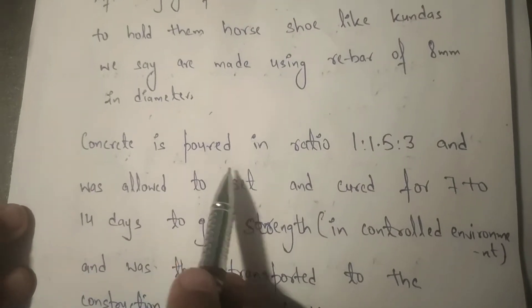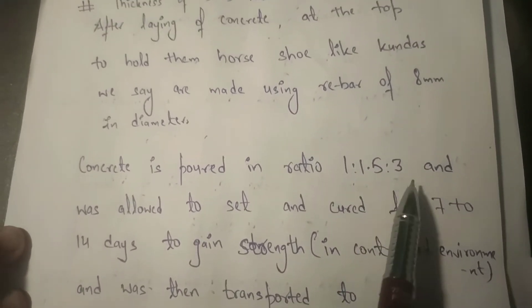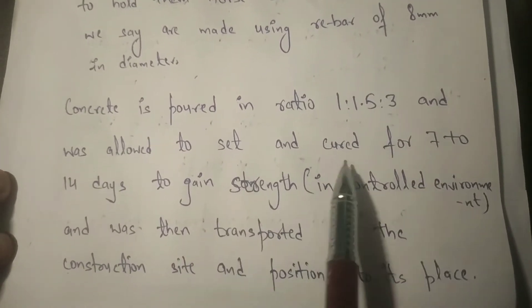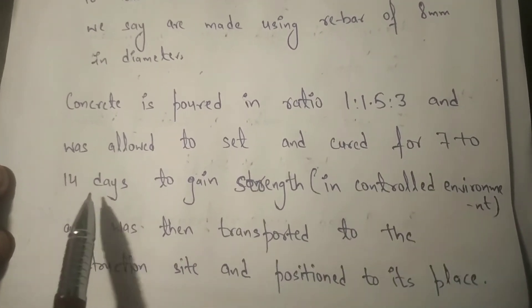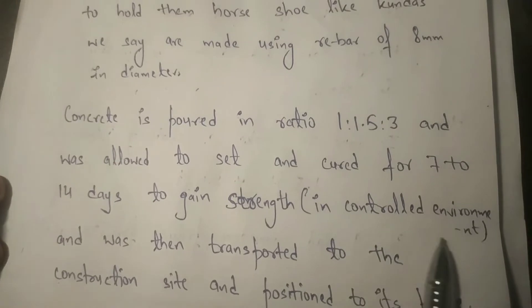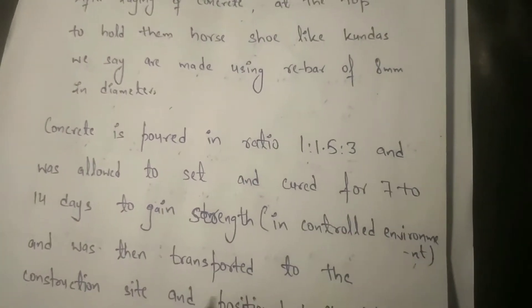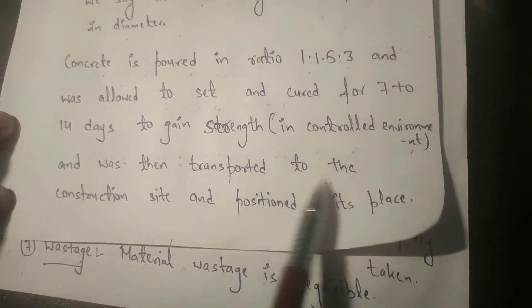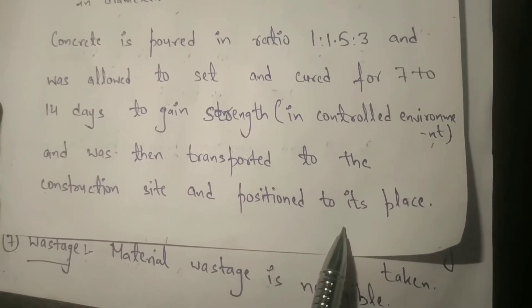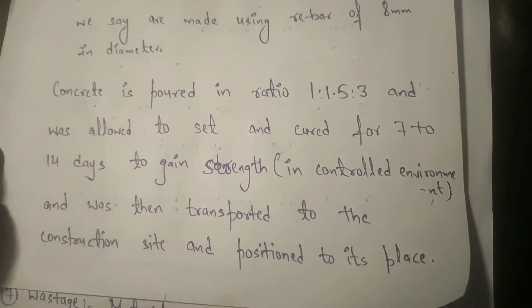Concrete is poured in a ratio of 1:1.5:3 and was allowed to set and cure for 7 to 14 days to gain strength. It is all done in a controlled environment and was then transported to the construction site and positioned to its place, as you have seen in the video.